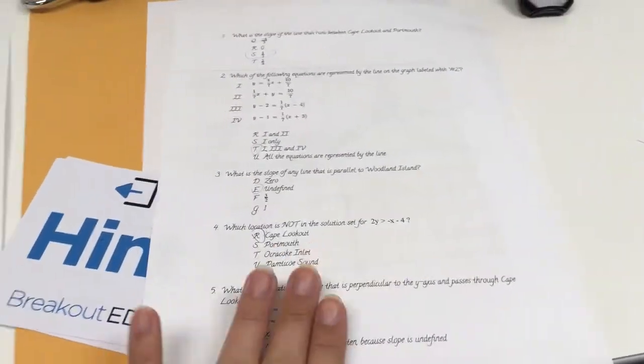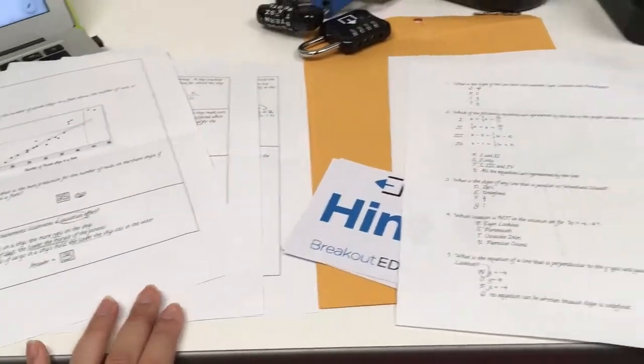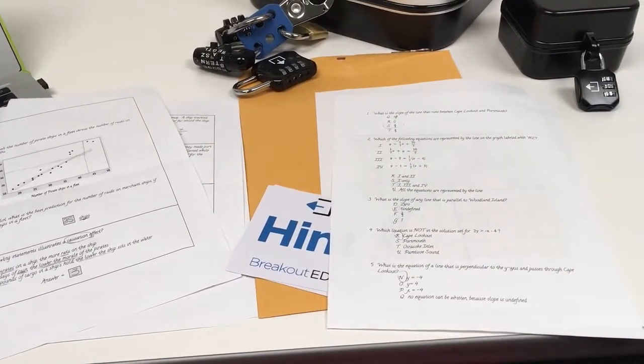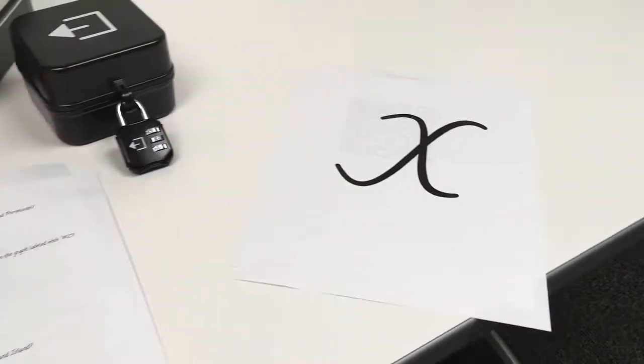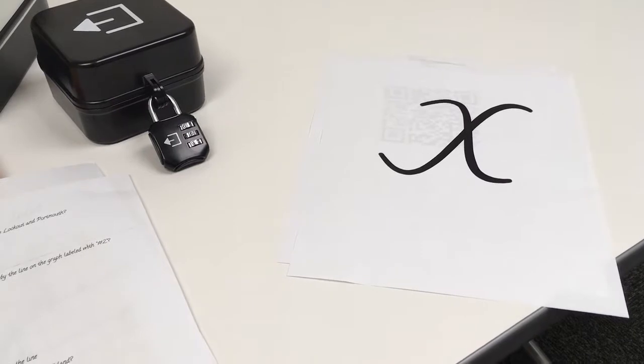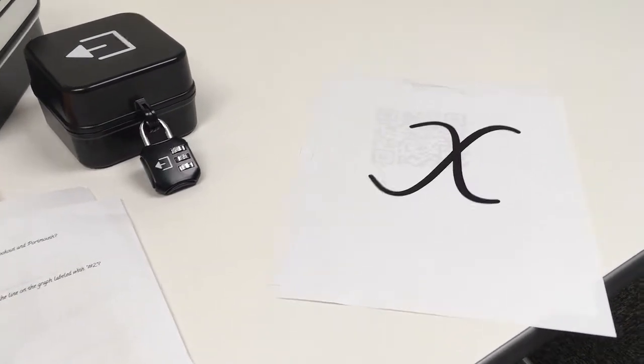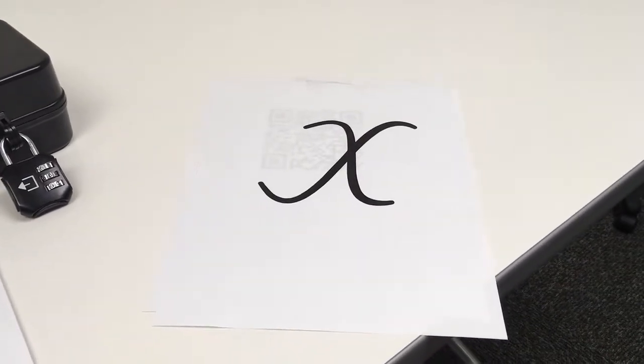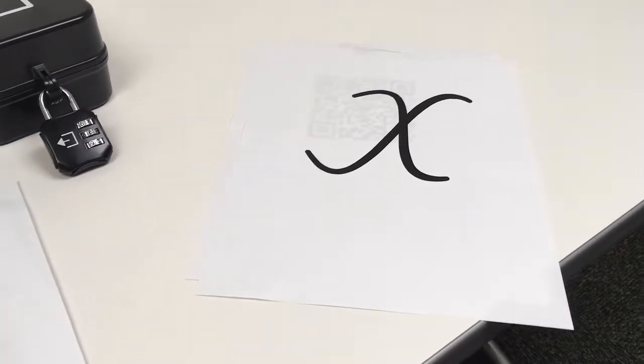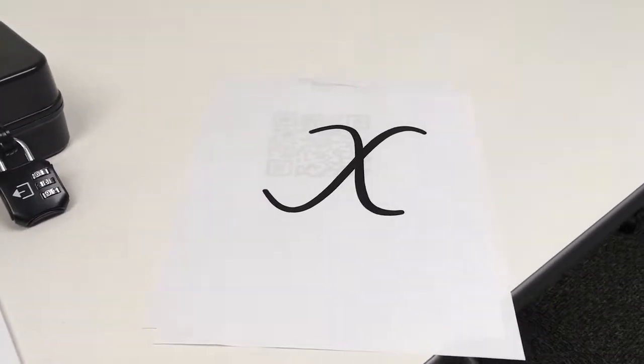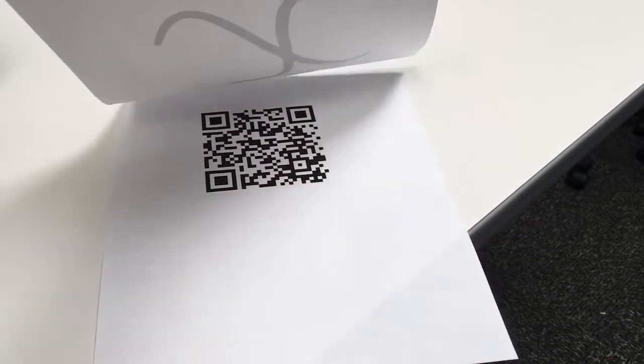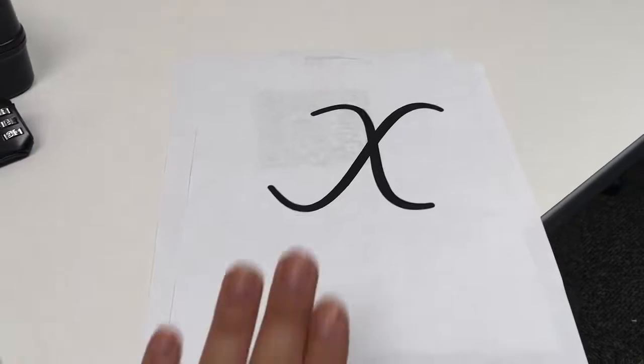After they've solved those two they may not know what to do next and hopefully they will see the X on the wall. If they don't they might use a hint card and ask you what do they do next and in your best pirate voice you should say X always marks the spot. Arrgh! And hopefully they go to the X and they lift it up, scan the QR code that's hanging on the wall.